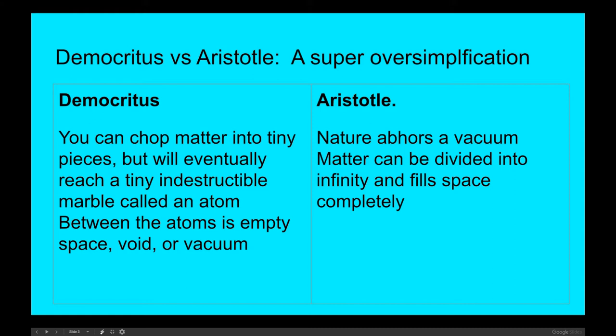Why they wouldn't be considered true science is these were purely in their head. And there was no underlying observation. Aristotle felt that nature abhors a vacuum. And if we could have taken him up to orbit, we would have been able to demonstrate that the vacuum is the preferred state of the universe. Aristotle thought nature abhors a vacuum and that matter could be divided infinitely into smaller and smaller particles and completely filled space. Democritus had some ideas to the opposite of that. He felt that you could chop matter into tiny pieces, but will eventually reach a tiny indestructible marble called an atom. Between the atoms is empty space, void, or vacuum.